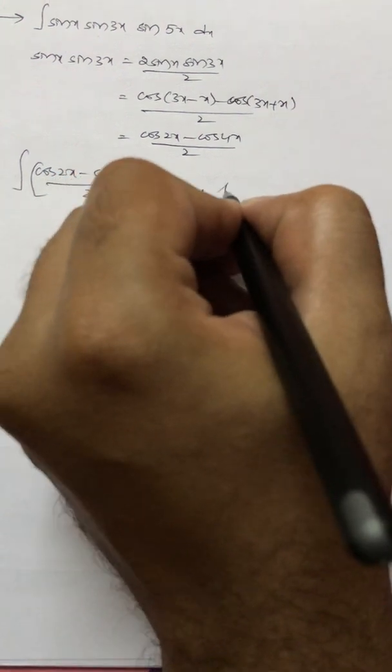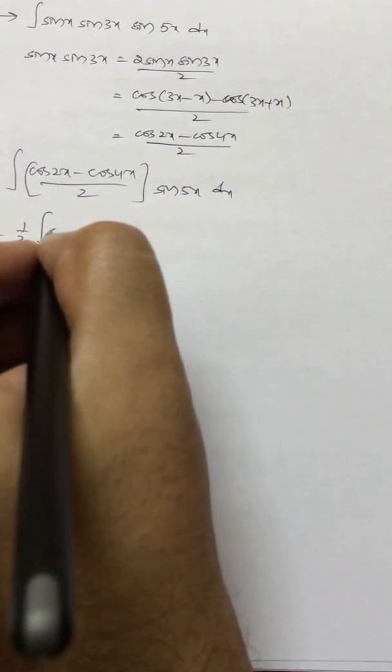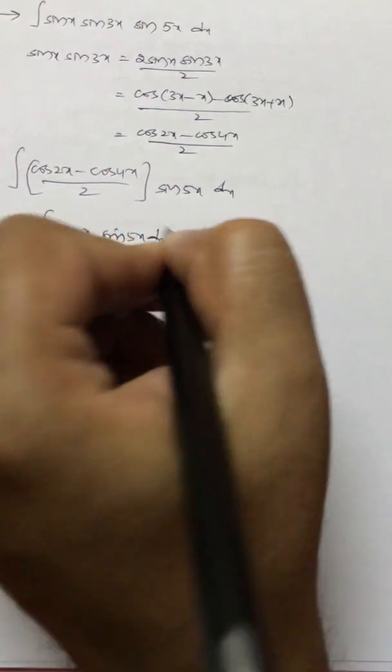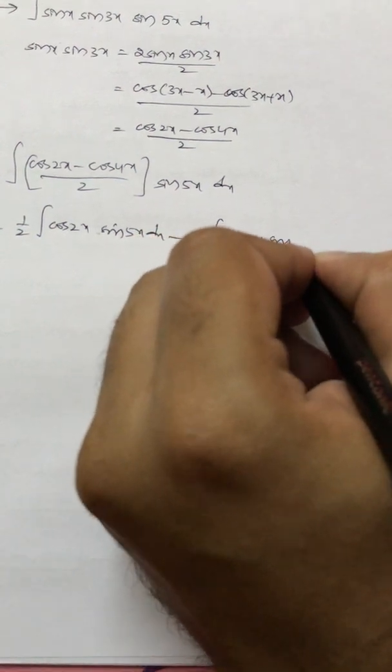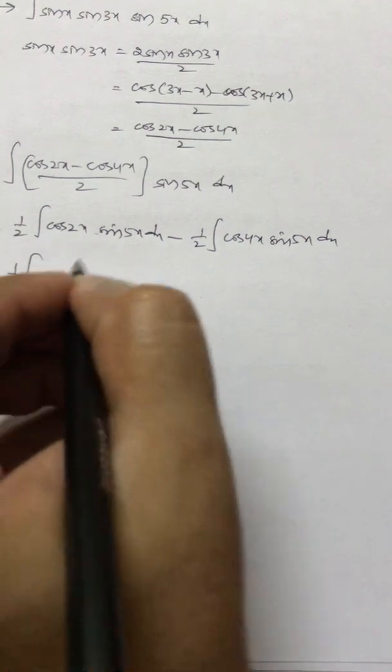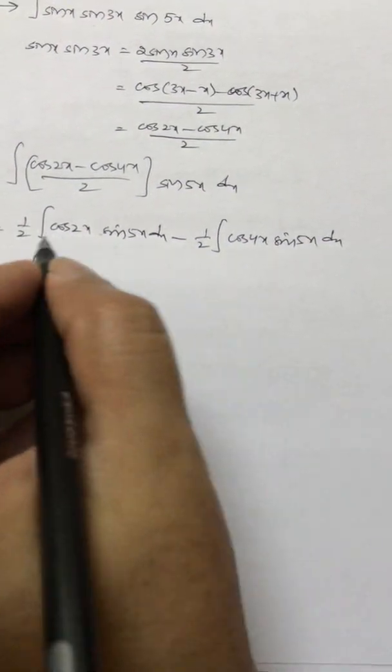We'll substitute cos 2x minus cos 4x by 2 into sin 5x dx. Now we'll split this into integrals: cos 2x sin 5x dx minus half integral cos 4x into sin 5x dx. So one by two into, this is again cos into sin, so we have to apply transformation again.